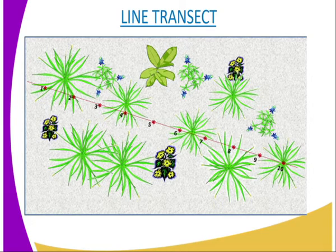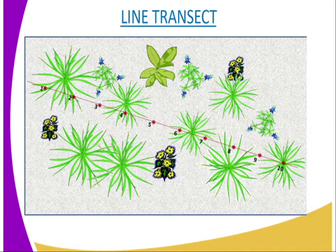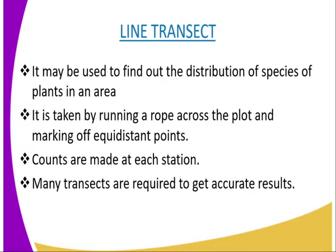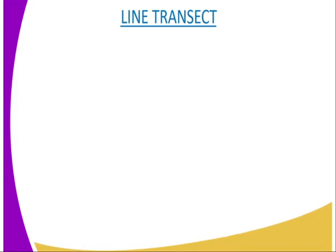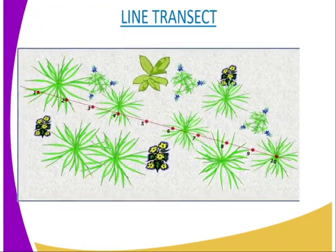Counts are made at each point, or you can call them stations. Only those plants along the line are identified, counted and recorded. Usually, a large number of transects are required to obtain more accurate results. A line transect is particularly useful when studying transition in habitats and populations of an area.